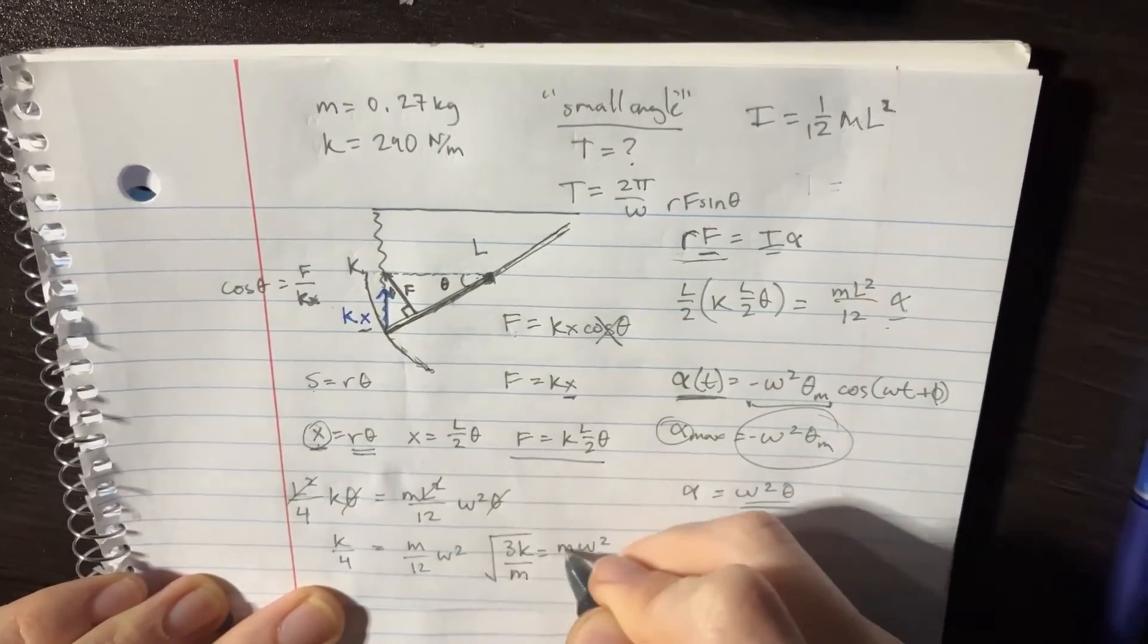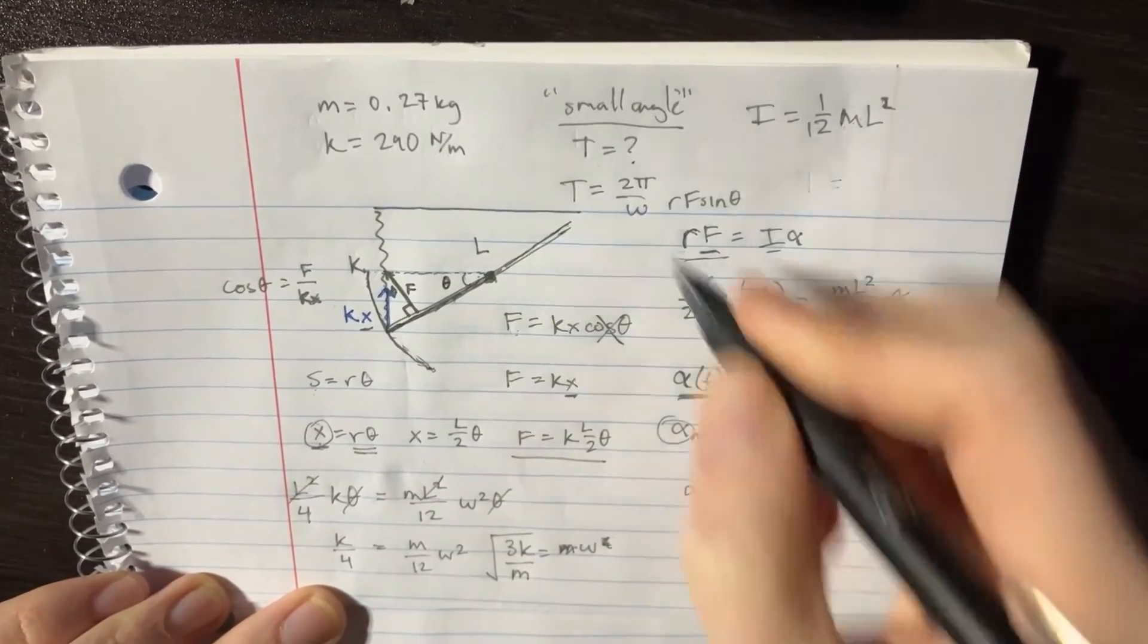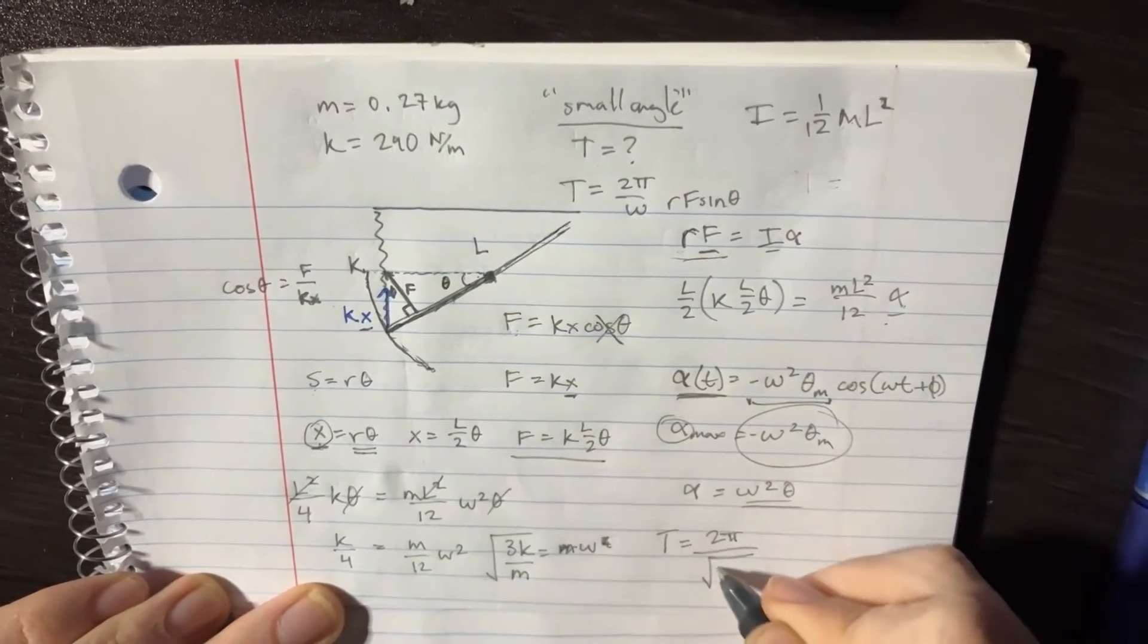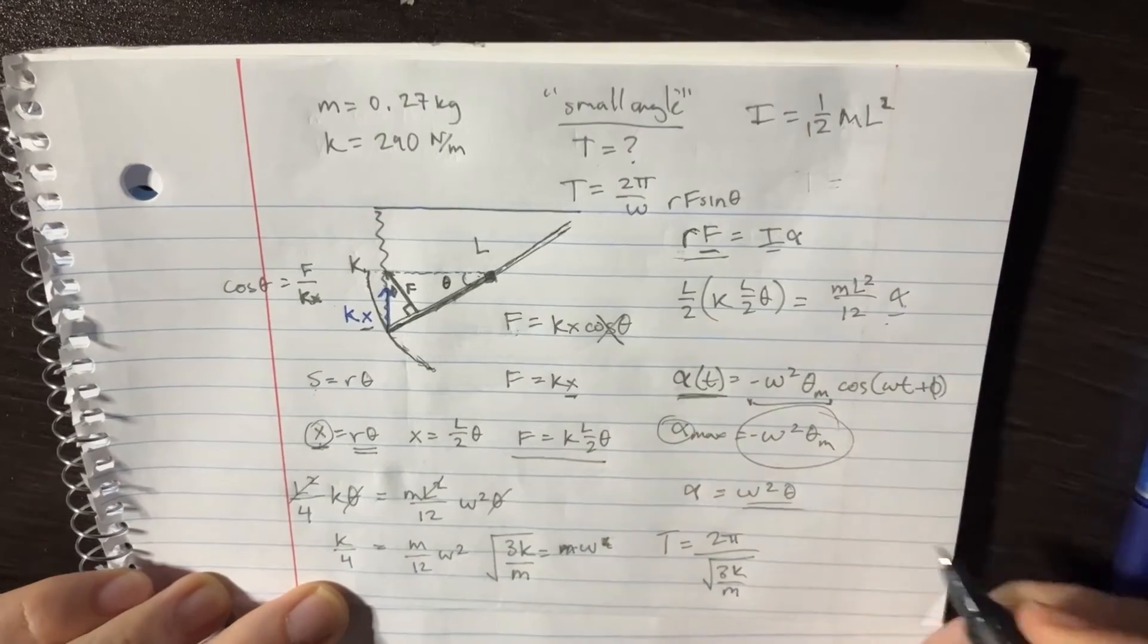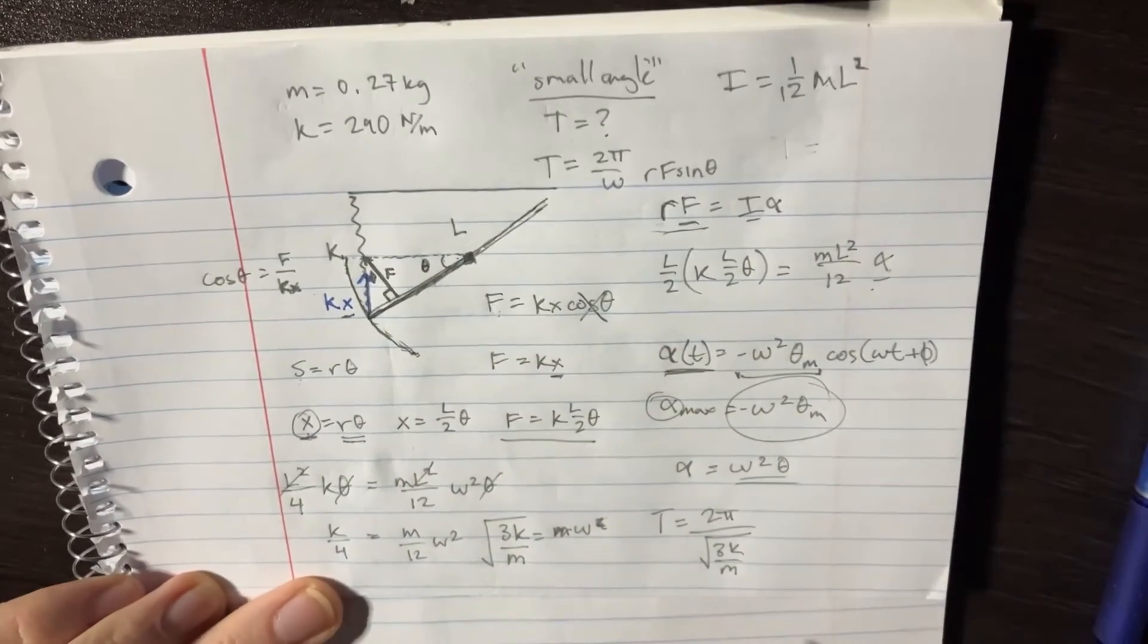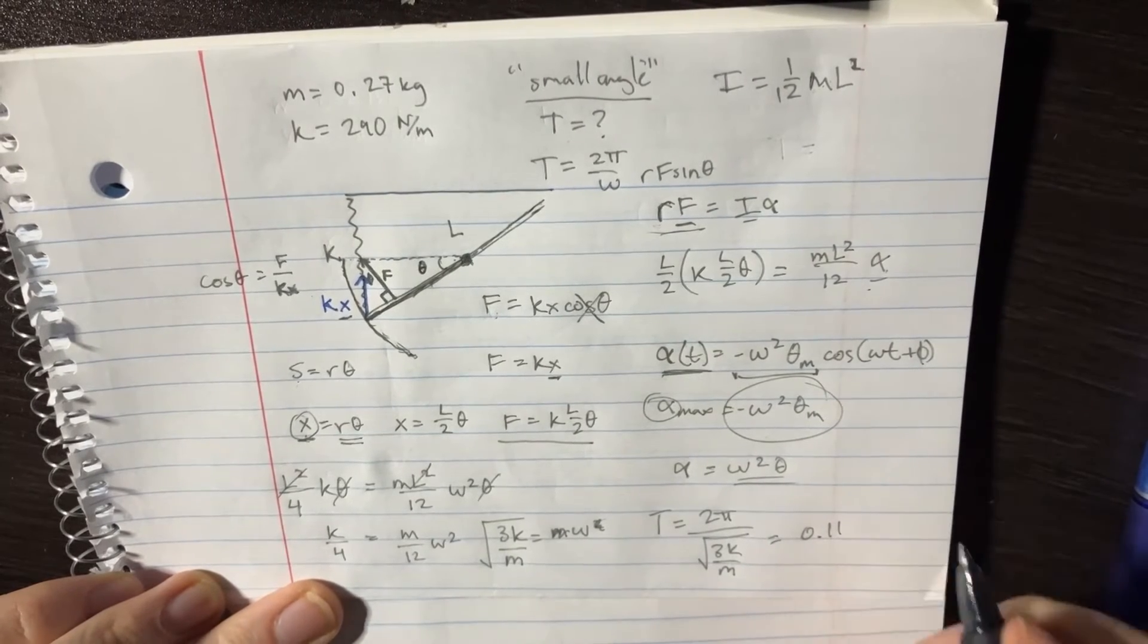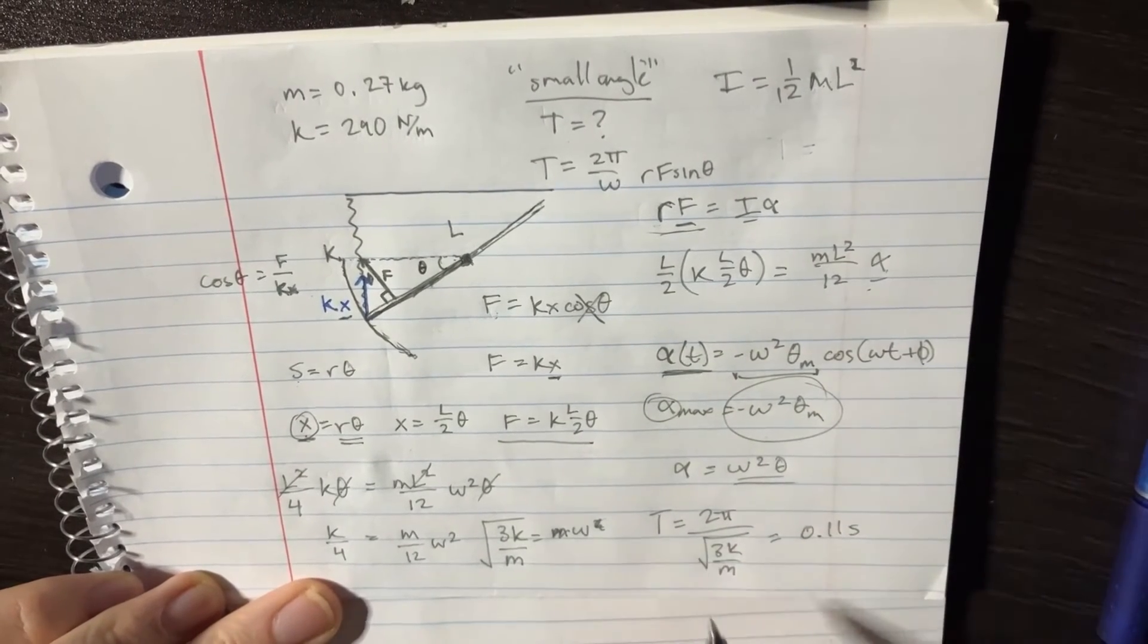And you can plug that back in over there: 2 pi over square root of 3K over M, and you should get your answer once you plug this in. That should be close to like 0.11, and I suppose this is seconds because this is the period.